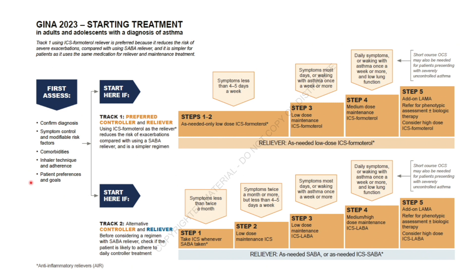You prefer to start with Track 1 or go to Track 2, based on the choice of reliever. Step-up or step-down treatment has to be done within the same track with the same reliever at each step, and the patient can be switched between tracks if needed on an individual basis. We prefer to start with a controller and reliever using an ICS-based treatment. The alternative is a controller and reliever with SABA. In Track 1, the reliever is low-dose ICS-formoterol, which is preferred because it results in fewer exacerbations and simplifies therapy.